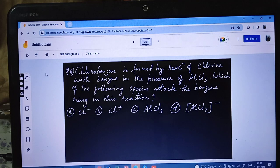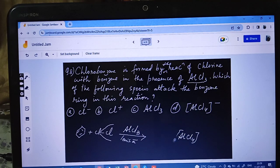Question number 8. Chlorobenzene is formed by the reaction of chlorine with benzene in presence of AlCl3. Which of the following species attack the benzene ring in this reaction? So recognize this: AlCl3 is a Lewis acid, an electron deficient species. And chlorobenzene is being formed by the reaction of chlorine with benzene. So let's write the reaction. This is the benzene ring. Now this benzene reacts with Cl2 in presence of AlCl3. AlCl3 is a Lewis acid, an electron deficient species.